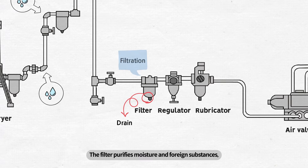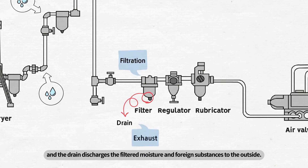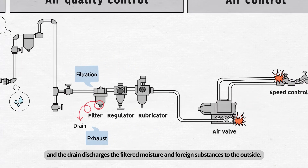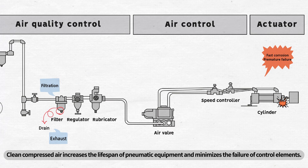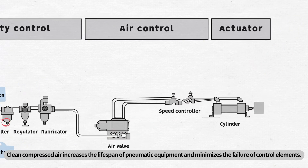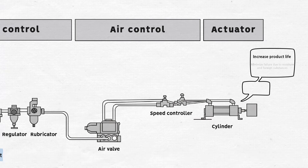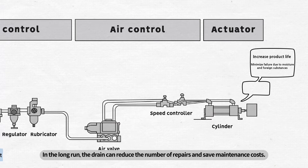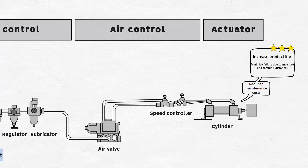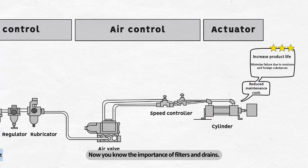The filter purifies moisture and foreign substances, and the drain discharges the filtered moisture and foreign substances to the outside. Clean compressed air increases the lifespan of pneumatic equipment and minimizes the failure of control elements. In the long run, the drain can reduce the number of repairs and save maintenance costs. Now you know the importance of filters and drains.